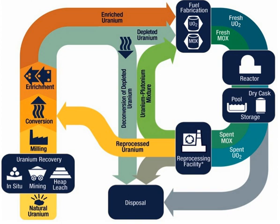The nuclear fuel cycle, also called nuclear fuel chain, is the progression of nuclear fuel through a series of differing stages. It consists of steps in the front end, which are the preparation of the fuel, steps in the service period in which the fuel is used during reactor operation, and steps in the back end, which are necessary to safely manage, contain, and either reprocess or dispose of spent nuclear fuel. If spent fuel is not reprocessed, the fuel cycle is referred to as an open fuel cycle or a once-through fuel cycle. If the spent fuel is reprocessed, it is referred to as a closed fuel cycle.